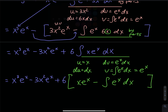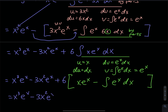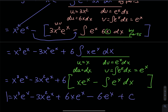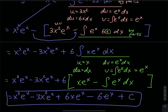Let's get straight to the final answer: x to the third e to the x, minus 3x squared e to the x, plus 6x e to the x, minus 6e to the x, plus C. That is the answer to the second integral.